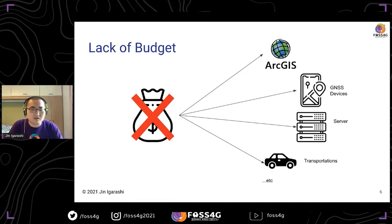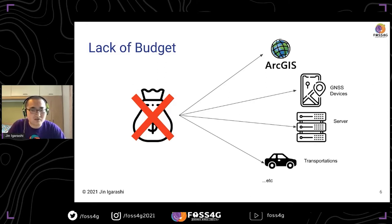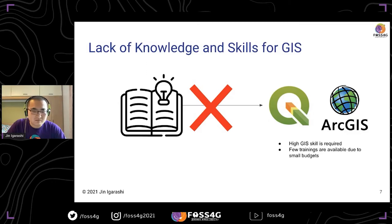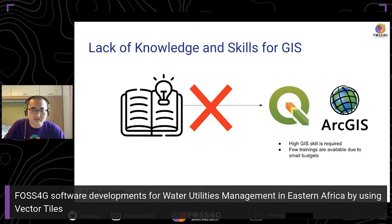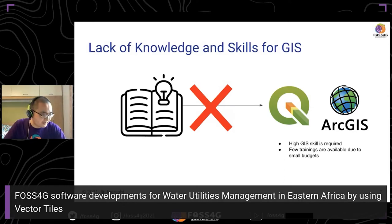Transportation problems also happen. But thanks to HOS4G, now we have QGIS instead of ArcGIS. And for data collection, we can use QField or Input. So at least these two problems can be solved by HOS4G. But if we can use QGIS or ArcGIS, there is still a problem of lack of knowledge and skills. QGIS requires high GIS skills and it's very difficult to train all staff in water utilities — maybe only a few GIS officers.